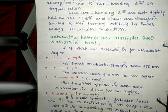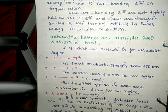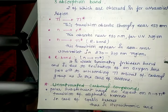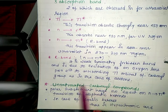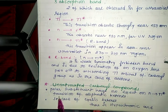Next, we discuss the R-band or n to pi star transition. It is a weak, symmetry-forbidden band due to excitation of an oxygen lone pair electron to the anti-bonding pi orbital of the carbonyl group, as in the case of acetone.